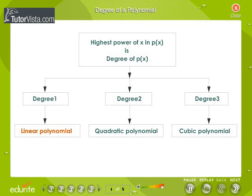A linear polynomial is a polynomial of degree 1. A quadratic polynomial is a polynomial of degree 2. A cubic polynomial is a polynomial of degree 3.